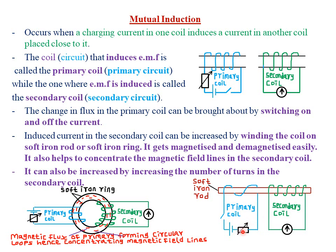The purpose of the rheostat is to vary the amount of current or voltage being supplied. Because it involves switching on and off, you can use the rheostat to determine the amount of EMF to be induced in the secondary coil — it determines the amount of voltage and current allowed to pass through the primary coil. So whenever we have a changing current in the primary coil inducing a current in the secondary coil, that is what we call mutual induction.